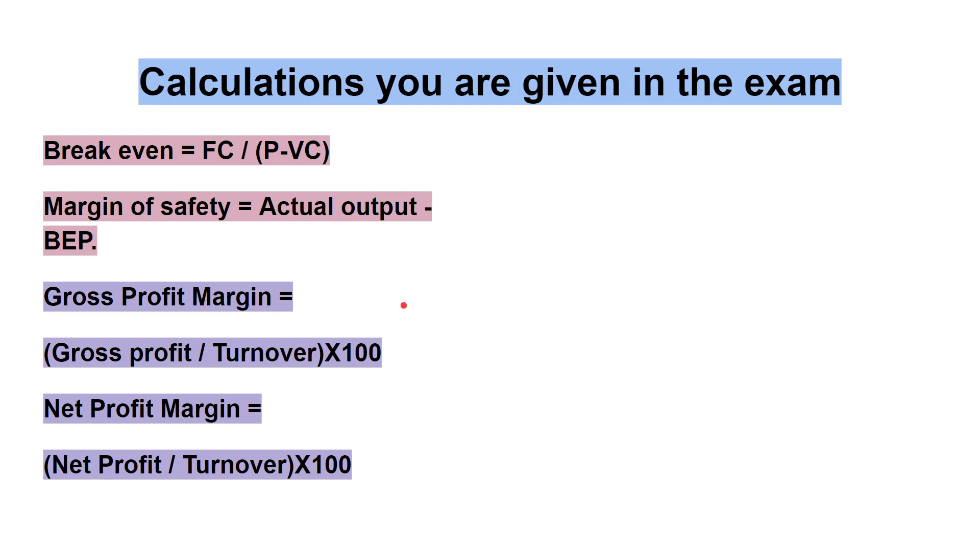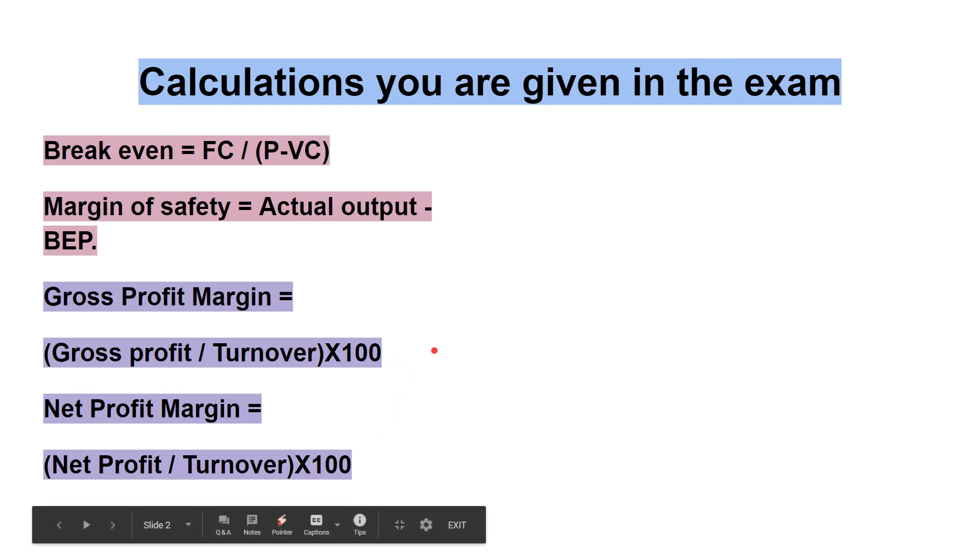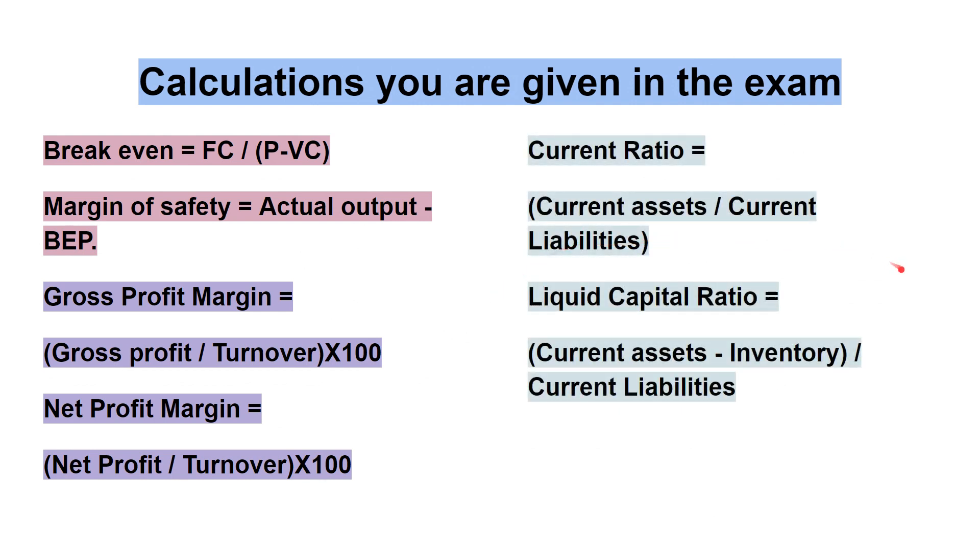Gross profit margin and net profit margin tell you as a percentage how much you actually keep as either gross profit or net profit. Then liquidity: current ratio is current assets divided by current liabilities, and liquid capital ratio is your current assets minus inventory divided by current liabilities. Great stuff guys, I hope that's been useful. See you next time.